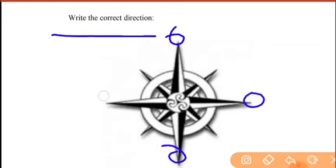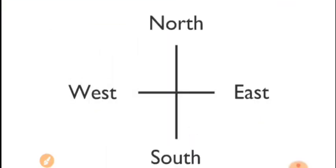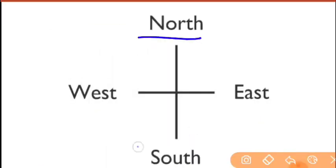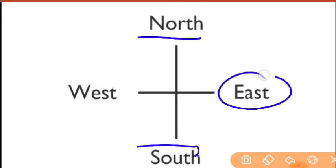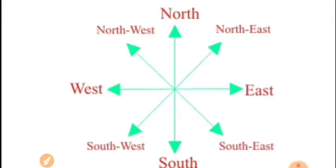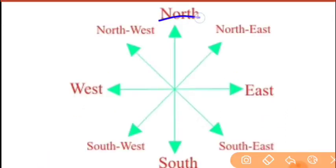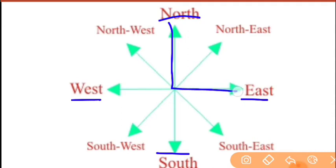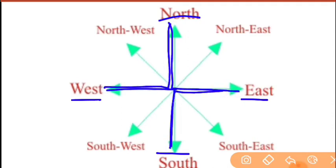There are eight directions in total. The basic ones are North, South, East, and West — four directions that you see everywhere on the map. If you divide the map with North, South, East, and West, you get four corners or blocks.